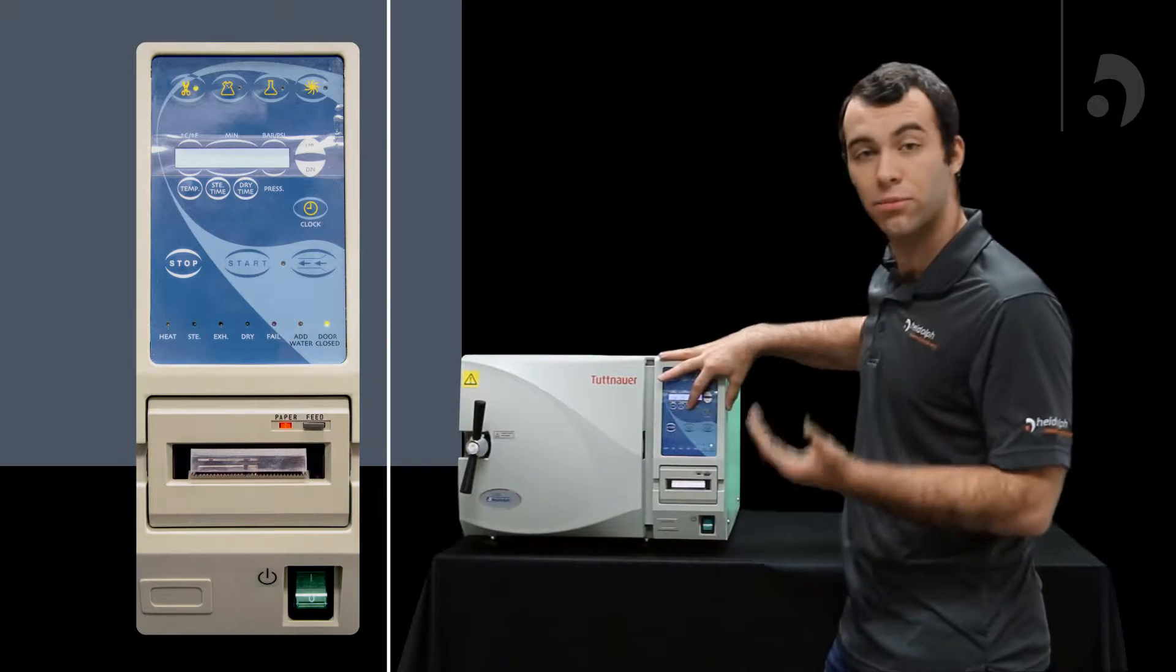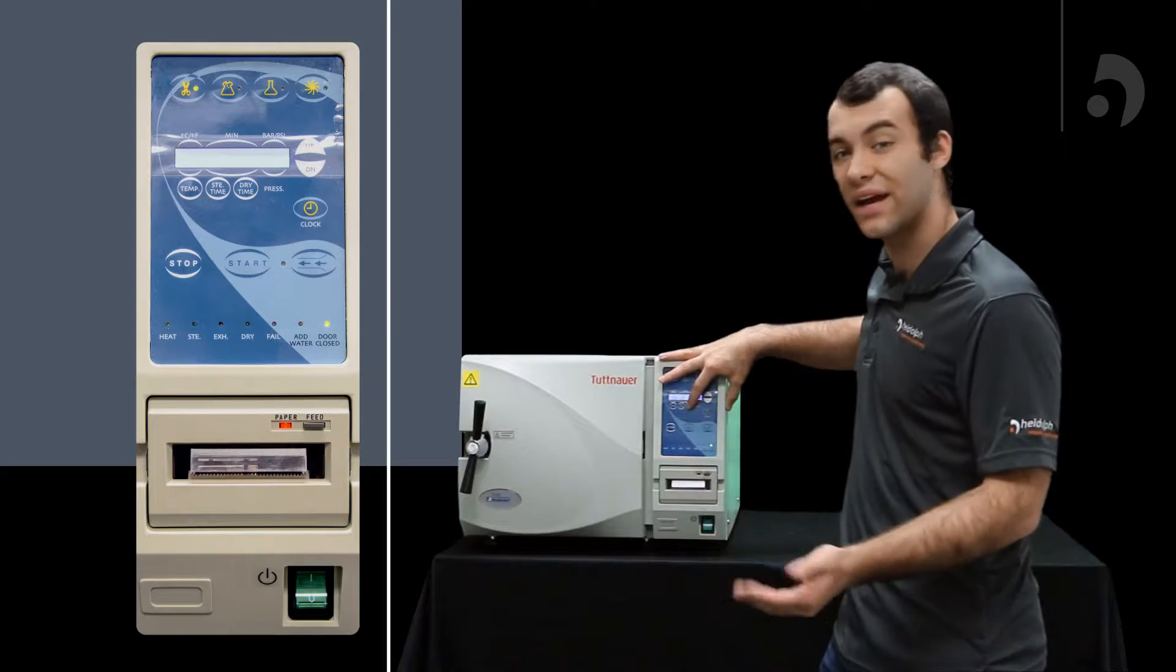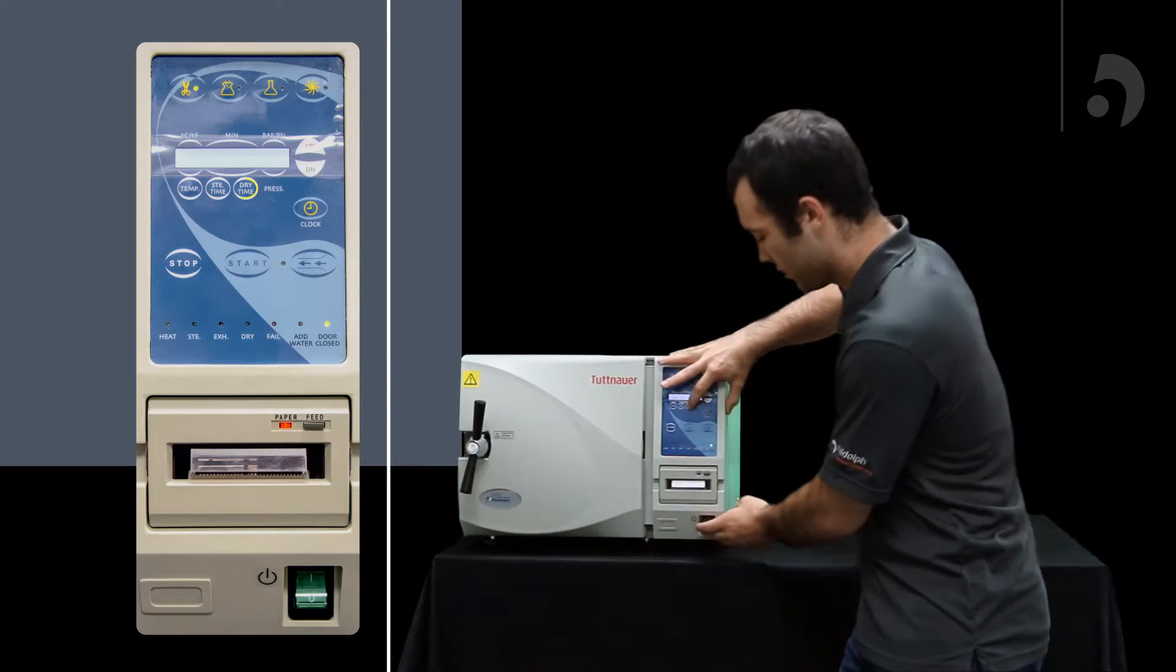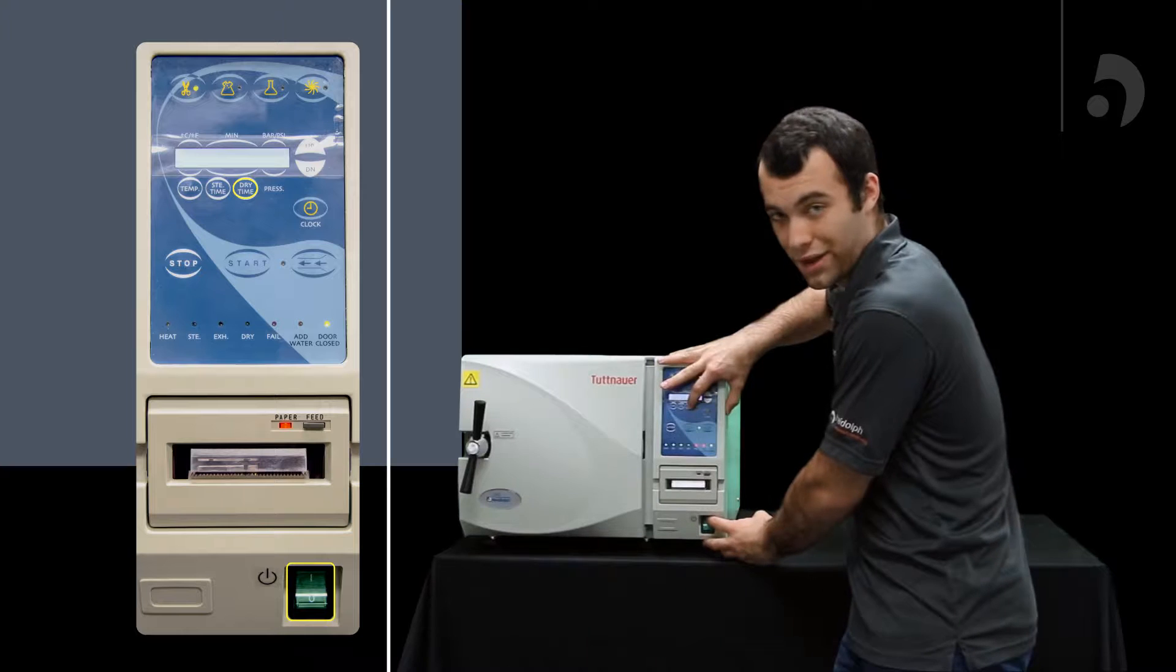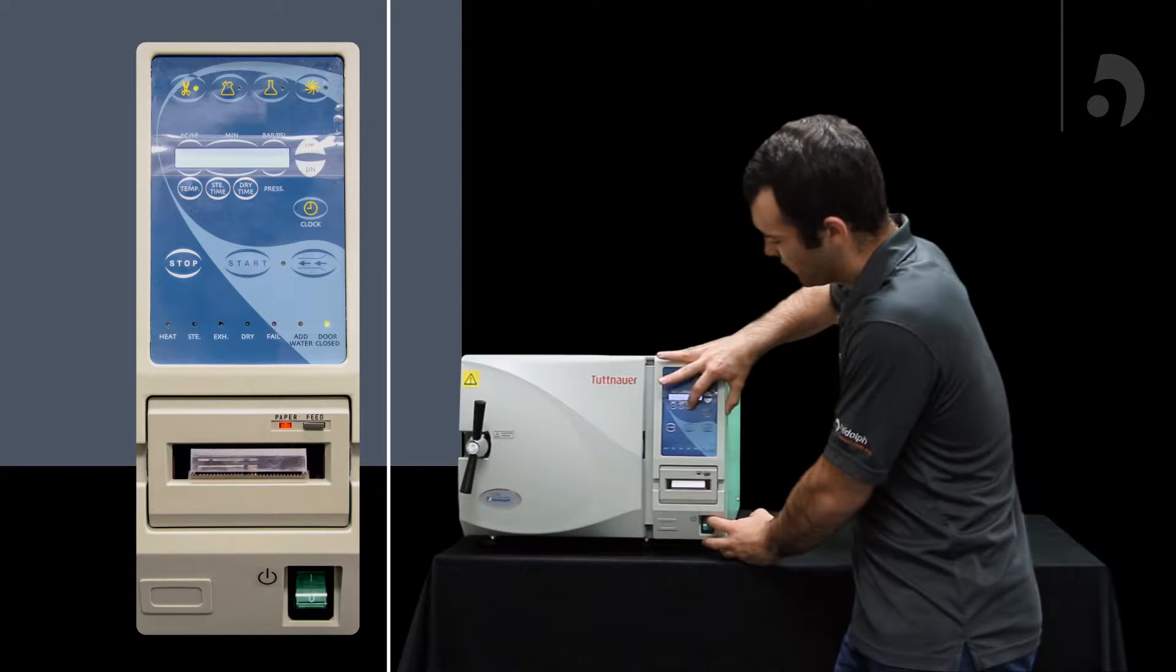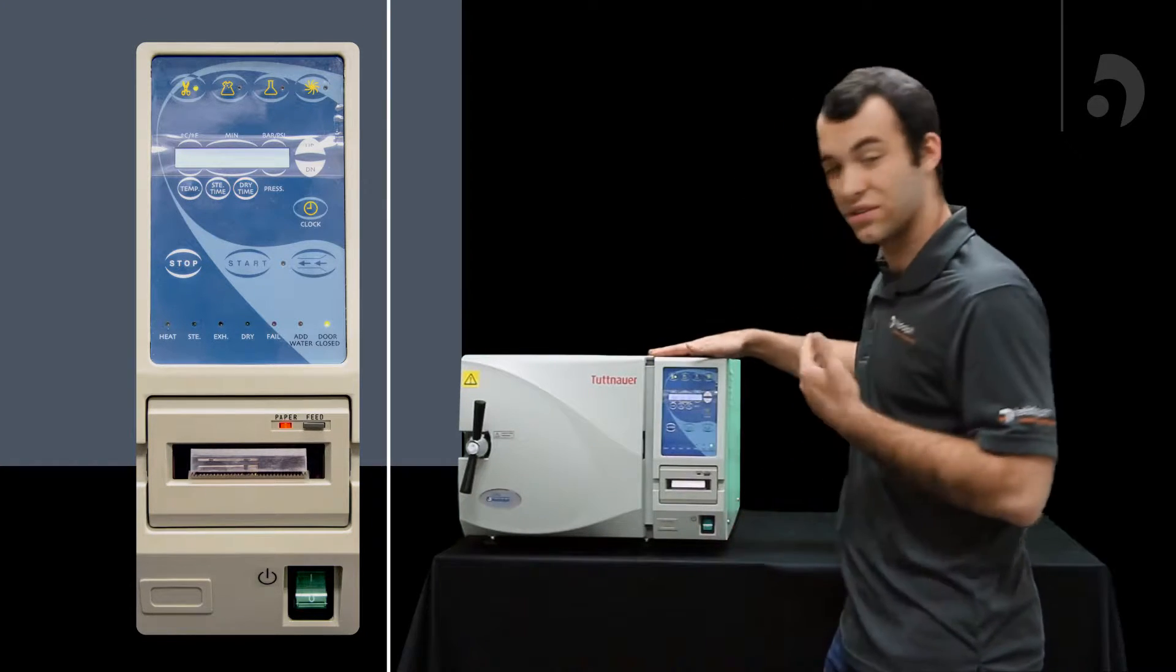And then if you want to do the same thing for your pressure between KPA and PSI, you hold the dry time button, cycle off, cycle back on, and now you'll notice that has changed.